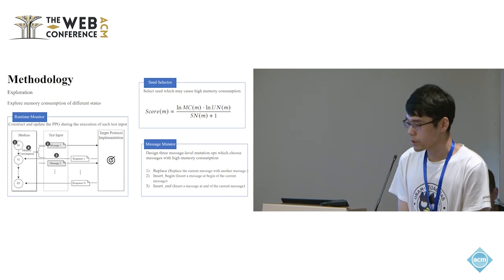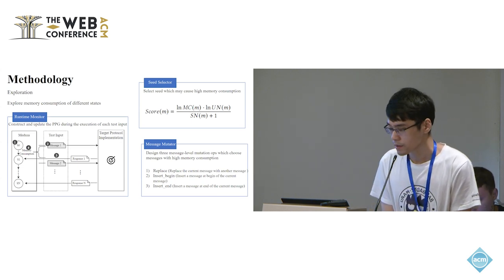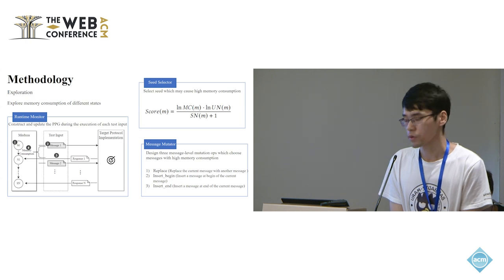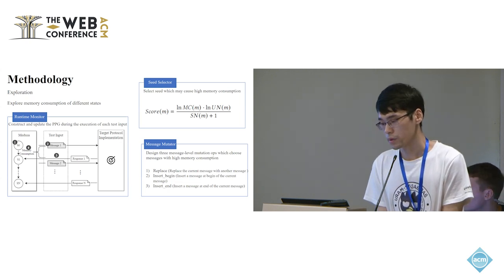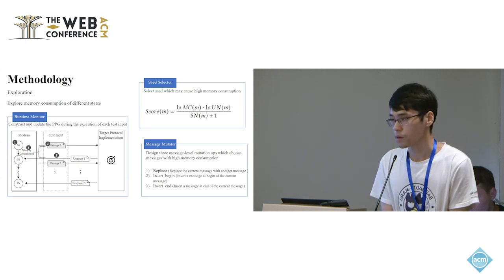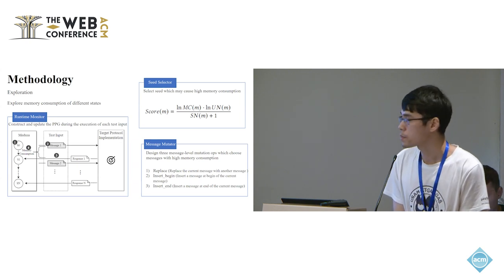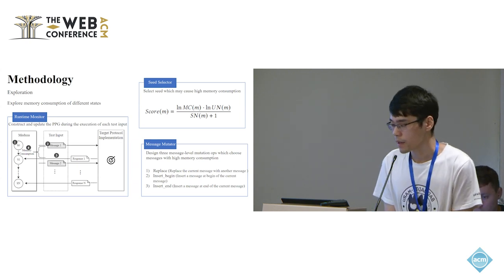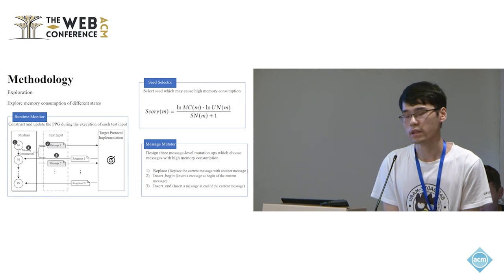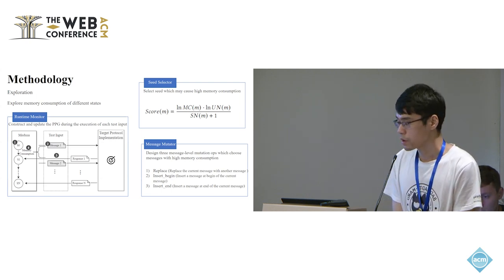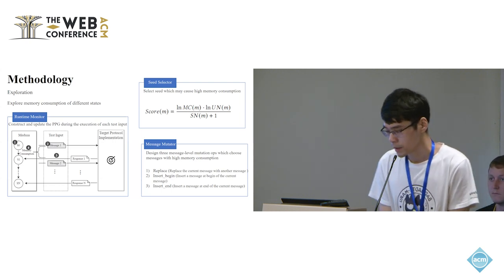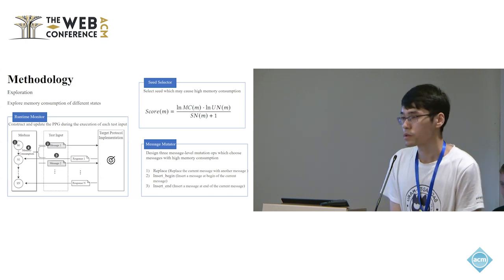The exploration phase includes a runtime monitor and a seed selector and message mutator. The runtime monitor accesses the network, proc file system to get the memory consumption between each message of test input. It parses a response message to get the protocol states and then it creates and updates the node of PPG based on this information. The seed selector combines the memory consumption of messages, the number of updates and the number of selections of the message node to calculate a score for the test input and uses scores in the seed selection. The message mutator uses three message level mutation methods to replace and insert messages which can cause high memory consumption.